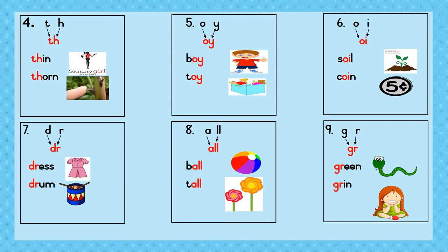Example 6. O-i-oi. S-oi-l: soil. Sentence: The plant grows well in the soil. K-oi-n: coin. Sentence: I have a five cent coin.